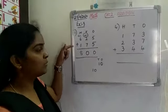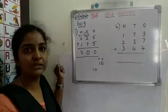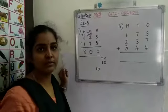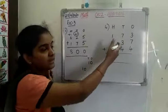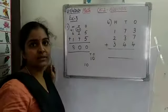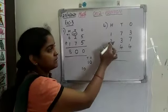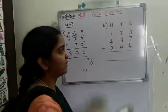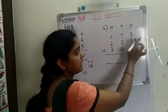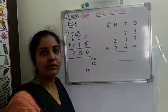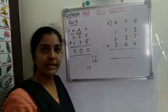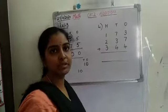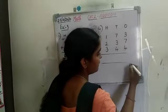Now we have learned how to add 3-digit numbers with 2 numbers. Now here we are having 3 numbers. So how will we add these numbers? 3 in the mind and 7 fingers up — so 3 plus 7 is 10. So 10 plus 4 is 14. So we got 14.